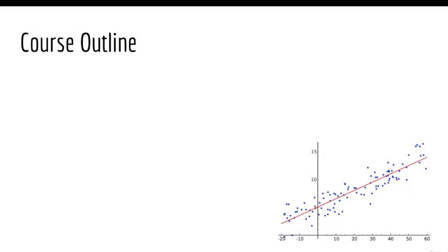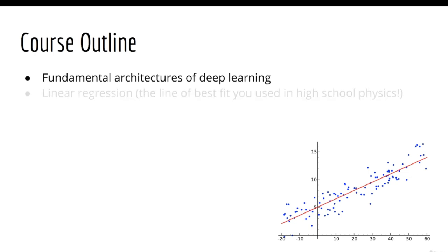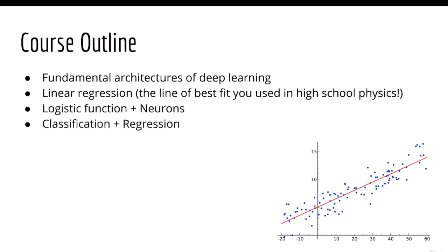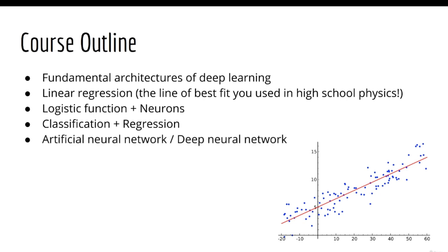Once you've done that, we are going to go through the fundamental architectures involved in deep learning. Believe it or not, this all starts with linear regression — the line of best fit you learned about in high school physics. We'll see that with just one little change, adding the logistic function on top of a linear model, we will get a neuron. This covers the two major types of supervised learning: classification and regression. Once you know the basics, it's time to get started with deep learning. The first deep learning architecture you'll learn about is the artificial neural network, also known as the deep neural network.